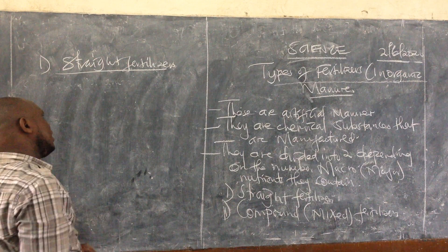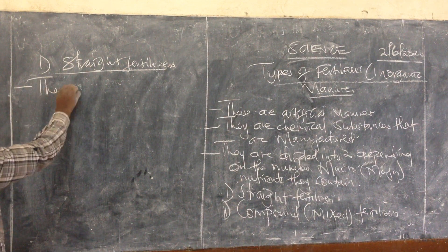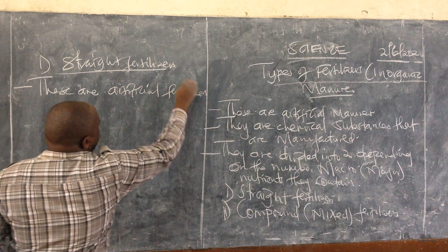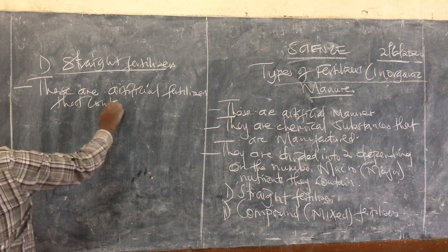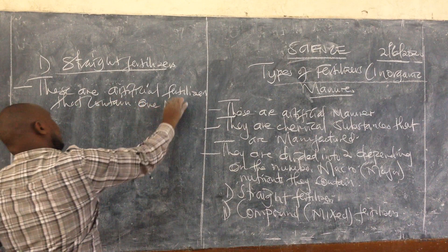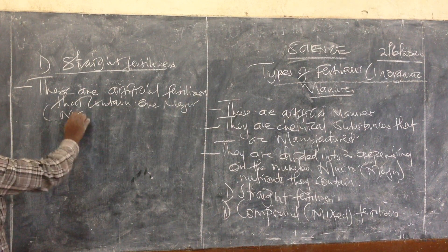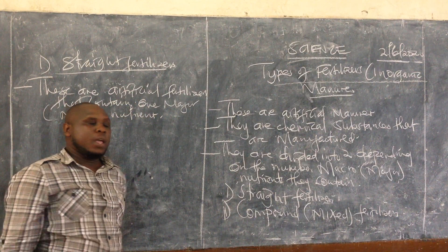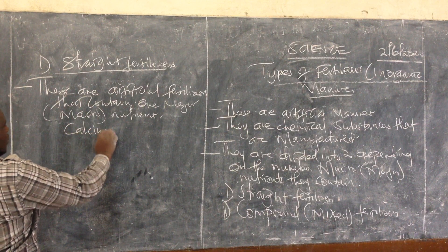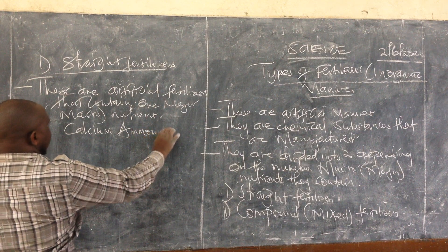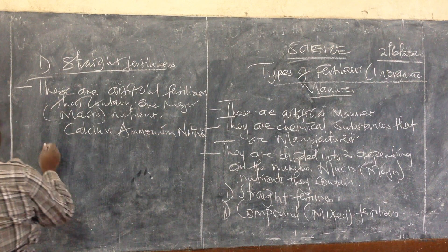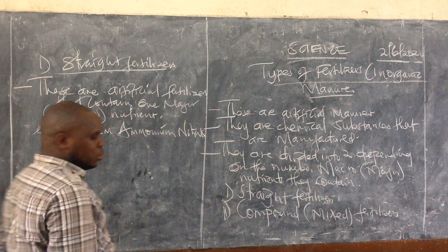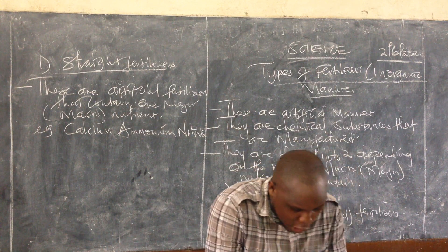What we mean by straight fertilizers, learner: these are fertilizers that contain only one macronutrient. A good example is calcium ammonium nitrate — it contains nitrogen as the major nutrient. So straight fertilizers contain just one macronutrient.